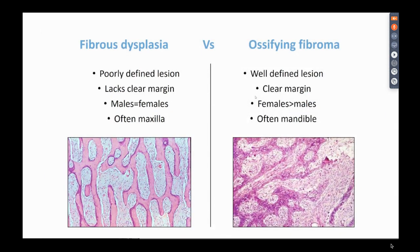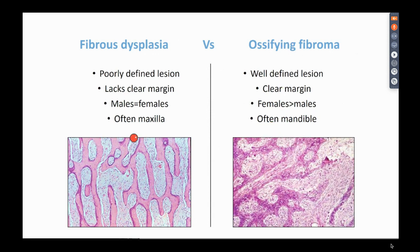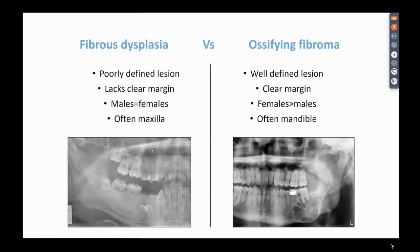Looking at fibrous dysplasia vs. ossifying fibroma side by side: fibrous dysplasia has more poorly defined lesions lacking a clear margin, whereas ossifying fibroma has well-defined margins. Ossifying fibroma is more common in females and in the mandible, while fibrous dysplasia is more common in the maxilla. 70 to 80 percent of fibrous dysplasia cases harbor a GNAS mutation, so FISH testing can be quite useful for differentiation.